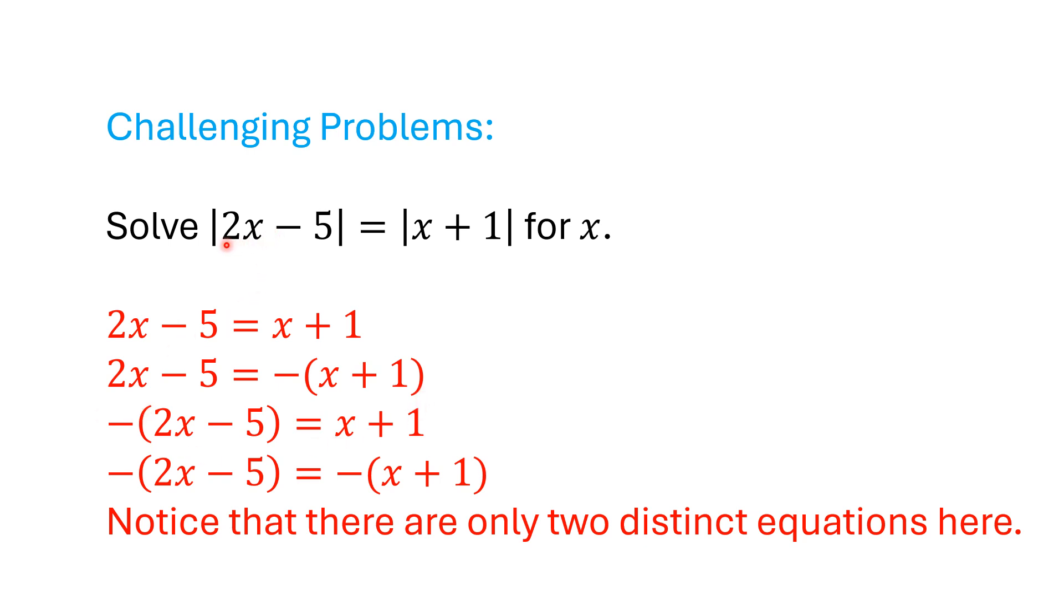Then we're going to let this become negative. -(2x - 5) = x + 1. And now they're both negative. -(2x - 5) = -(x + 1).